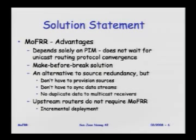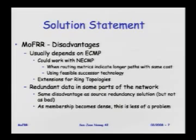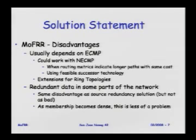Upstream routers don't have to support this, so you only need to deploy it in parts of the network — not your entire ISP or enterprise network. To keep it lean and simple there are some disadvantages: this usually depends on equal-cost multipath, though it can work for non-equal-cost multipath by making longer paths look like equal-cost paths or using feasible successor technology as in EIGRP. We've also made extensions for ring topologies where not all nodes are equal cost to the source. The disadvantage is that redundant data goes on some parts of the network — the cost of make-before-break — but as membership becomes more dense, that's less of a problem.